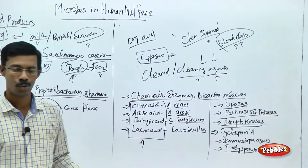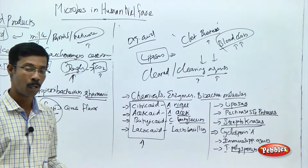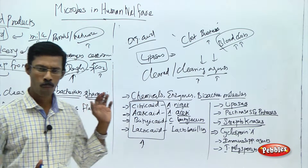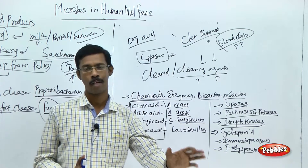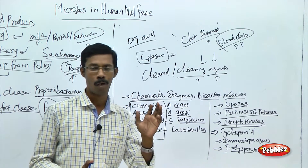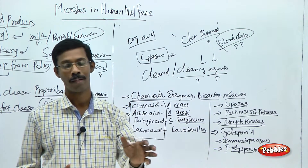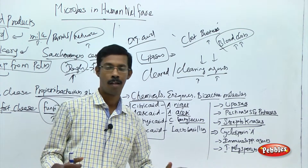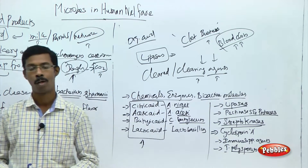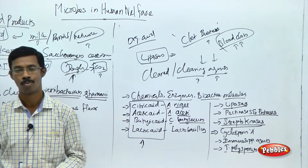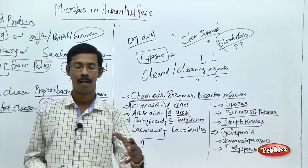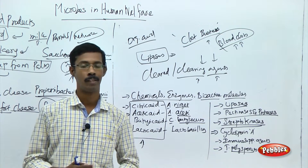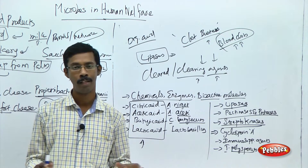These are the details you should remember about microbial industrial products. Now we are going to move to the next section — how can we use microbes to treat sewage plants, and then how can we use microbes to control agents, that is bio insecticides and biopesticides. That is what we are going to see next. Thank you so much.